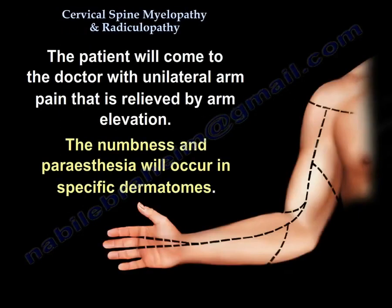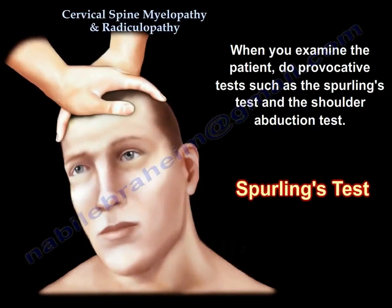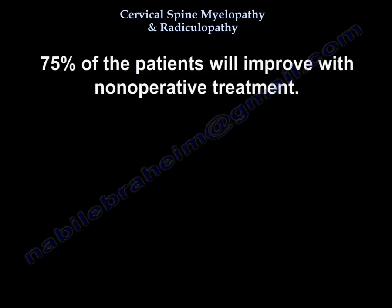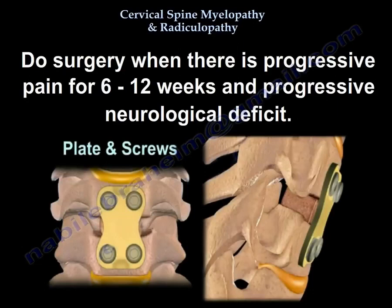The patient will come to you with unilateral arm pain relieved by arm elevation, and numbness and paresthesia in specific dermatomes. When you examine the patient, you will do provocative tests such as Spurling's and the shoulder abduction test. Even if they show you a bad cervical disc on MRI, treat it conservatively for about 3 months — give the patient therapy and NSAIDs. 75% of patients will improve with non-operative treatment. Surgery is indicated when there is persistent pain for 6 to 12 weeks and progressive neurological deficit.